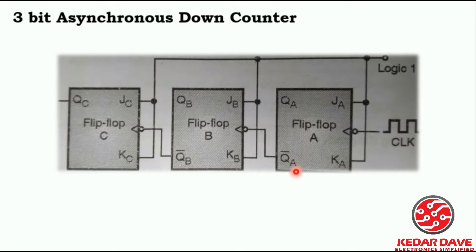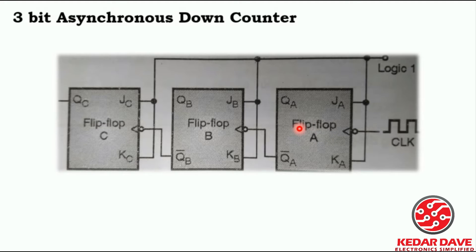We are providing the output to the clock pulse of the B flip-flop. But there is a minor change: in the up counter we were providing the original output from the flip-flop to the clock, but instead of that we are now providing the inverse output — whatever the flip-flop provides us. Previously we saw the original output of the JK flip-flop, but now we are providing the inverse output QA bar.